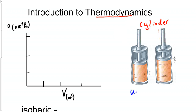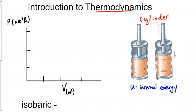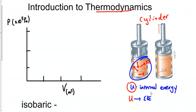The new term is U, referred to as internal energy, and it shows up in chapter 9. Internal energy references the gas molecules inside the cylinder — each one has a velocity and therefore a kinetic energy. The letter U represents the sum of all those kinetic energies of all the particles inside, so it is measured in joules.